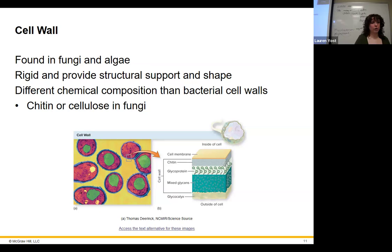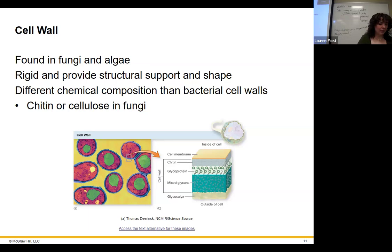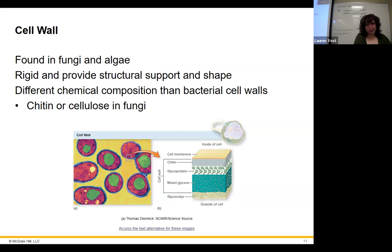Cell walls — fungi, algae, and plants have cell walls. Algae should be thought of more like plants because they do have photosynthesis. If it does photosynthesis and it's a eukaryote, it's going to have a cell wall. Fungi have cell walls too, but they don't do photosynthesis. Algae we're also talking about includes kelp and sea kelp — they look like plants but they are actually algae.